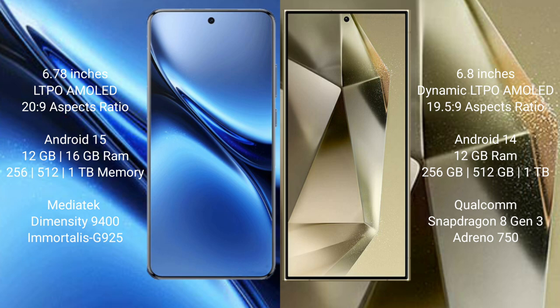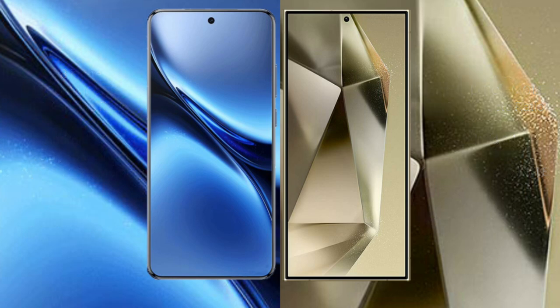Vivo X200 Pro offers 8GB or 12GB RAM and 256GB or 512GB internal storage, powered by the MediaTek Dimensity 9400 processor with GPU 925. Samsung Galaxy S24 Ultra offers 8GB or 12GB RAM and 256GB or 512GB internal storage, powered by the Qualcomm Snapdragon 8 Gen 3 processor with Adreno 750 GPU.